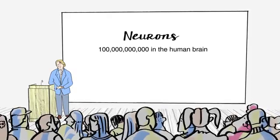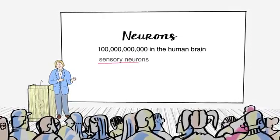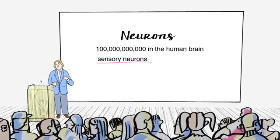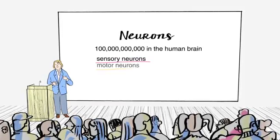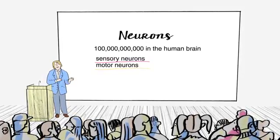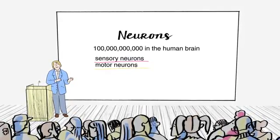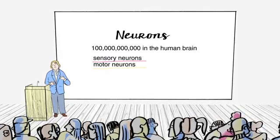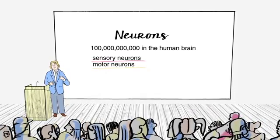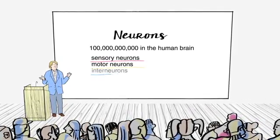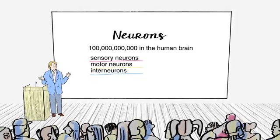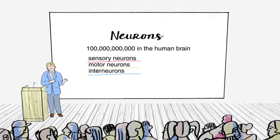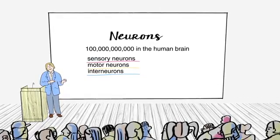So neurons come in three flavors. There's sensory neurons, which take in information from the environment, from the external world. There's motor neurons, which go from the brain out to your motor control. So if you touch something hot and you feel a pain, that's sensory neurons. If you wrench your hand back or you reach for something, that's motor neurons. And finally, there's interneurons, which connect different neurons without making contact to the external world, either through sensation or through motor action.